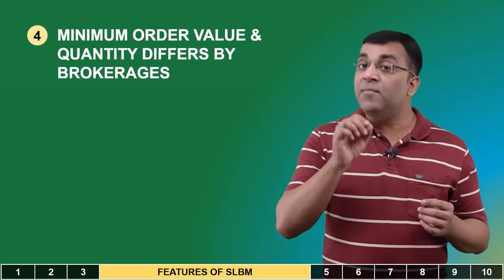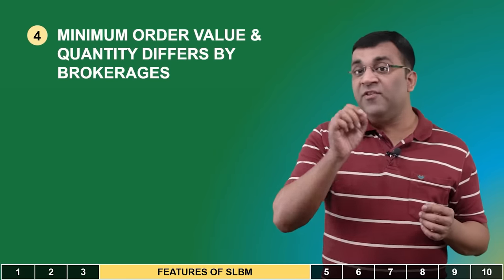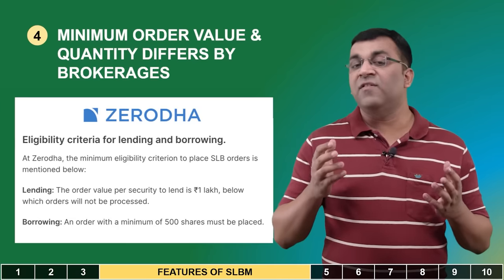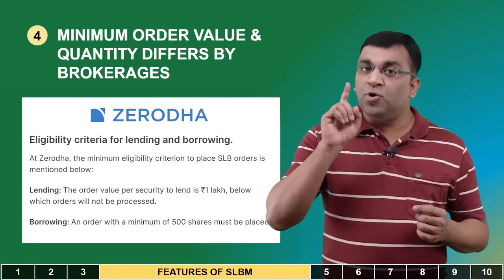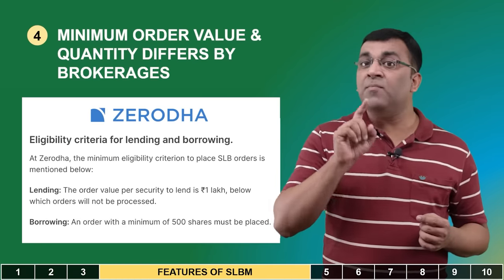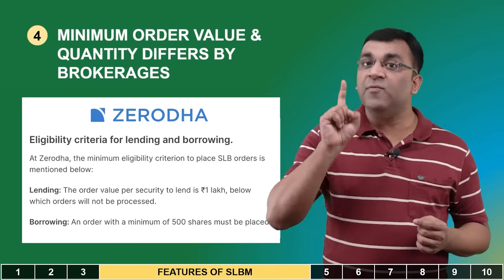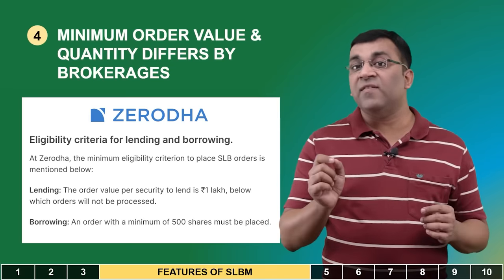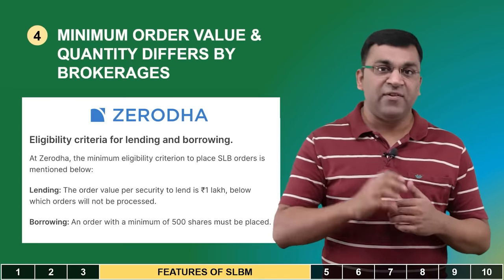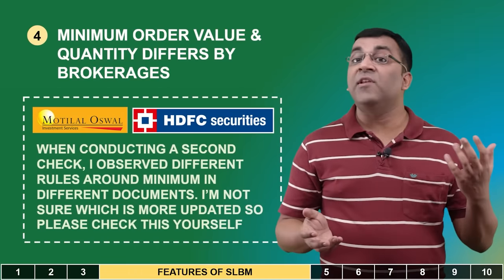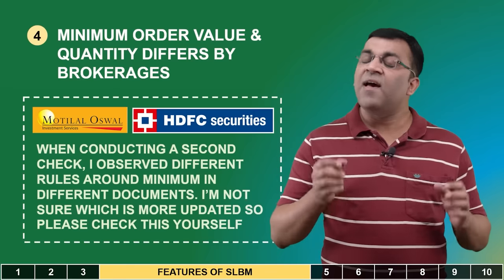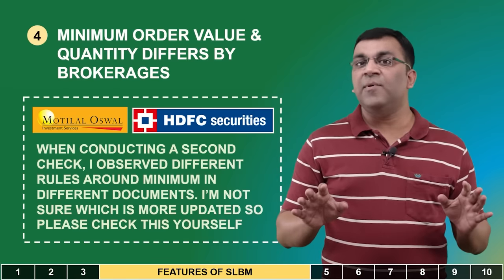When it comes to minimum order value, different brokerages have different requirements. Zerodha requires lenders to place a minimum order value of at least 1 lakh rupees per security while borrowers should seek an order size of at least 500 shares. On the other hand, Motilal Oswal Securities and HDFC Securities have no such limitations on the minimum lending quantity.